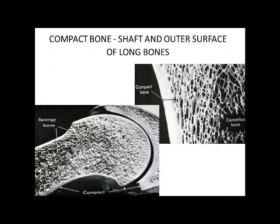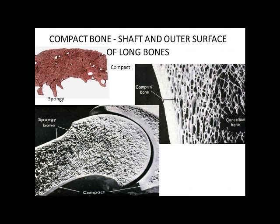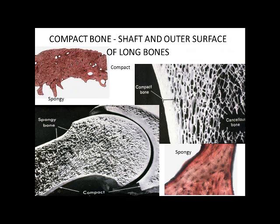Compact bone forms the shaft or the outer surface of bones. On the outside is compact bone, and on the inside is called spongy bone, or cancellous bone, where the bone marrow would be. The specimen we're looking at today is mostly compact bone, with a little bit of spongy bone on the inside.